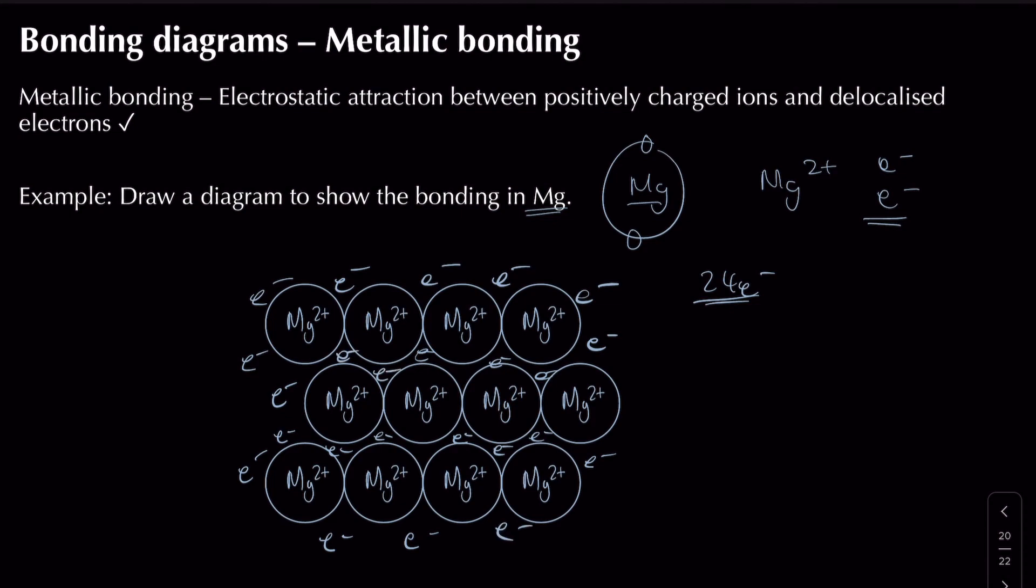A good diagram always has labels, so I'm going to label this a positive metal ion, and then I'm going to label this - and the keyword here is delocalised electrons.